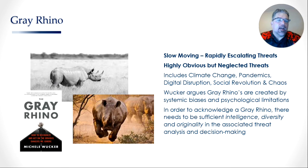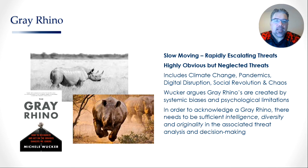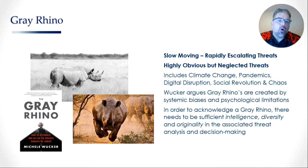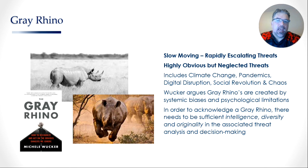The second concept that has become popularized in the last year is the gray rhino. It has actually been around for a while but has just become popular recently. Essentially, a gray rhino is a slow-moving, rapidly escalating threat — or a highly obvious but neglected threat. This includes things like climate change, pandemics, digital disruption, social revolution, and chaos.